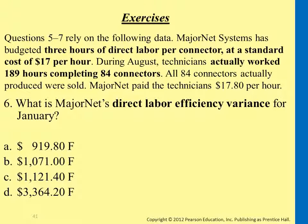The problem tells us we budgeted three hours for each connector, and at the end the total hours spent for these workers was 189 hours to complete 84 connectors. But if we had 84 connectors using the budgeted rate of three hours, what would be the budgeted hours for these 84 connectors?